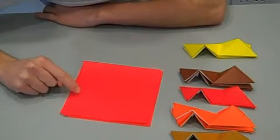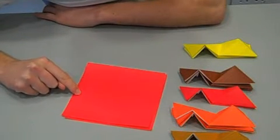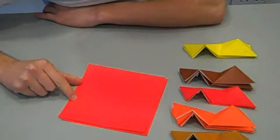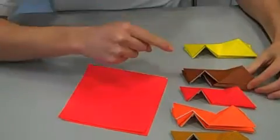So first things first, you need 30 pieces of origami paper. Five different colours, six of each colour. You want to make these basic units.